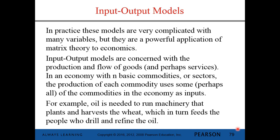In an economy with n basic commodities or sectors, the production of each commodity uses some or all of the commodities in the economy as inputs. Outputs are what's being produced; inputs are what are required in order to make those productions. For example, oil is needed to run machinery that will plant and harvest the wheat, which in turn feeds the people who drill and refine the oil. So to produce and refine the oil requires commodities — in this case wheat — and the machinery to harvest that wheat needs oil.